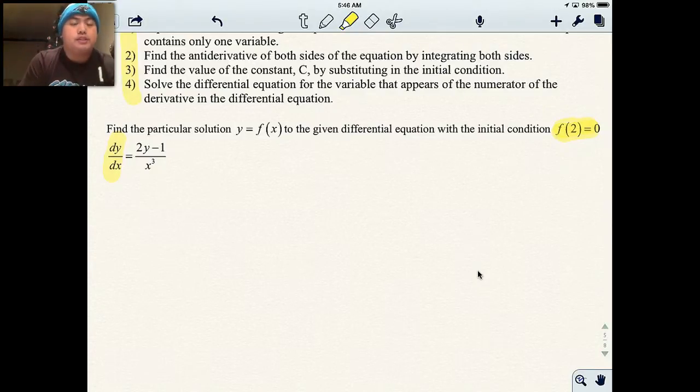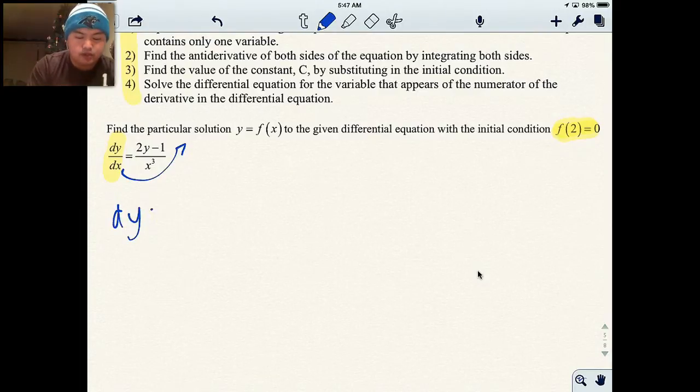What I'm going to do is I'm going to separate the variables meaning I'm going to put dy on one side and I'm going to put x to the third on the other side. So what I'm going to do is I'm going to multiply both sides by dx. So this becomes dy equals 2y minus 1 over x to the third dx, which is what I want.